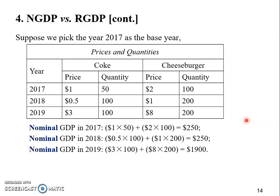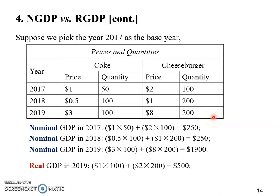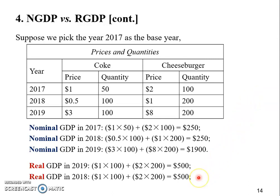Let's start with 2019, the very last year. The economy produces 100 cokes and 200 cheeseburgers in that year. When we calculate real GDP in 2019, we don't use 2019 prices — we go back to 2017, the base year, and use those prices: one dollar for coke, two dollars for cheeseburger. So: $1 × 100 + $2 × 200 = $500. That gives us $500 as the real GDP in 2019.